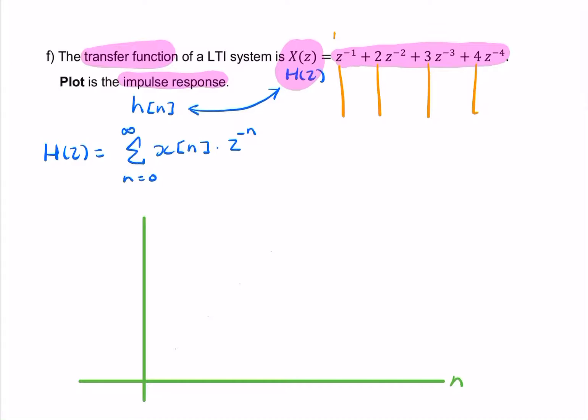So the 1 happens when n equals 1. The 2 happens when n equals 2. The 3 happens when n equals 3. The 4 happens when n equals 4.